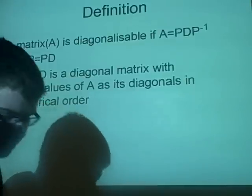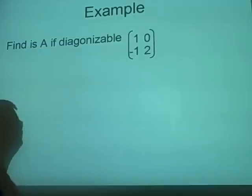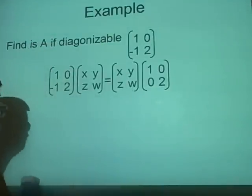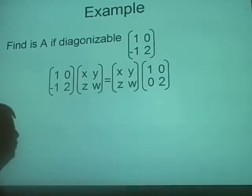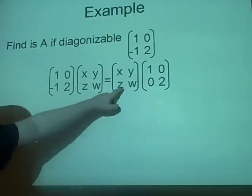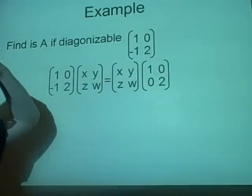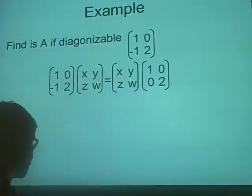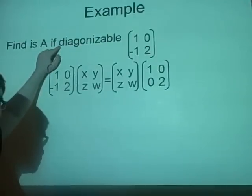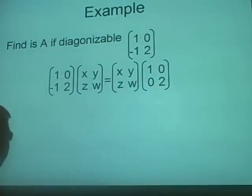Example: find if A is diagonalizable, using the same matrix as before. We set up AP = PD, placing the unknown matrix P with entries x, y, z, w in the middle. The diagonal matrix D uses the eigenvalues from the previous example. If you're given this type of question fresh, you'd first have to find the eigenvalues.